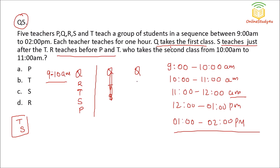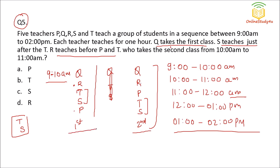Two possibilities arise: Q, R, P, T, S or Q, R, T, S, P. Both satisfy the constraints — S is just after T, and R is before both P and T. In both cases, R takes the second class from 10 to 11. So the answer is option D.